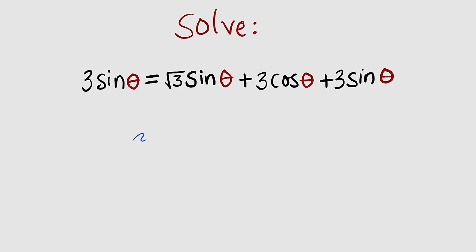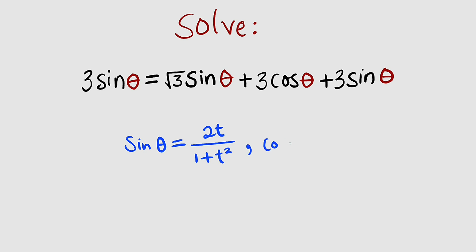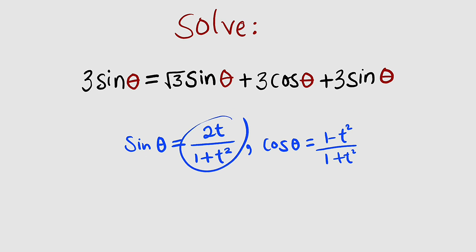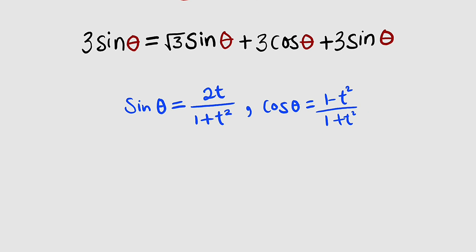Remember in our previous lesson we have seen that sine theta is equal to 2t divided by 1 plus t squared, and cosine theta is equal to 1 minus t squared divided by 1 plus t squared. Wherever we have sine theta we are going to replace it with this expression, and cosine theta with this one.